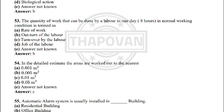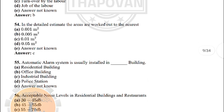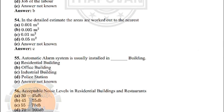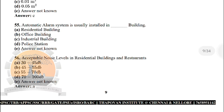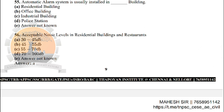Next: in the detailed estimate, the areas are worked out to the nearest — the correct answer is option C: 0.01 m². Next: automatic alarm system is usually installed in — the correct answer is: industrial building.